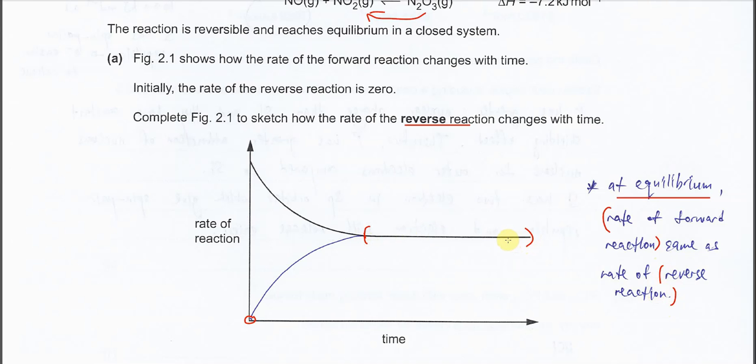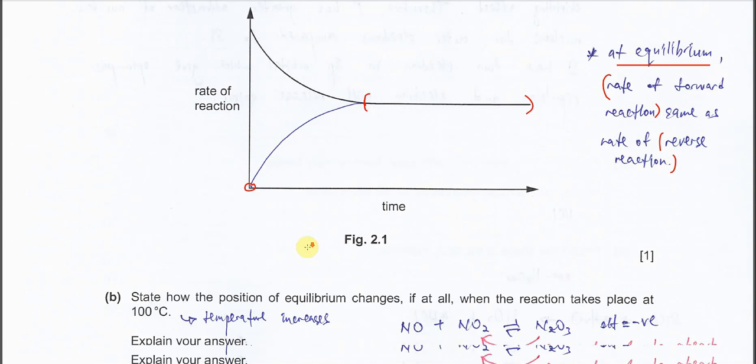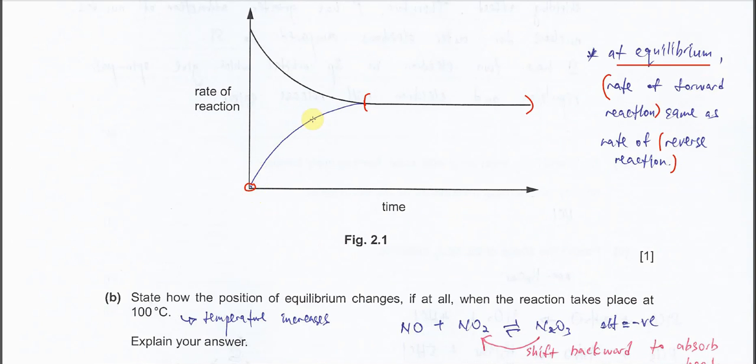So when they reach this point and the rate is constant, from here onwards we know they reached equilibrium, because the rate forward and reverse are now the same values. You just need to draw one line here and meet at a certain point - they reached constant rate for both.